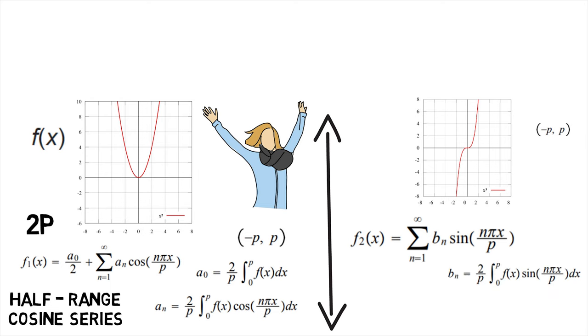Here, b_n is given by 2 upon p into integral of f of x into sin of n pi x upon p dx from 0 to p. This expansion is called the half-sine series expansion.